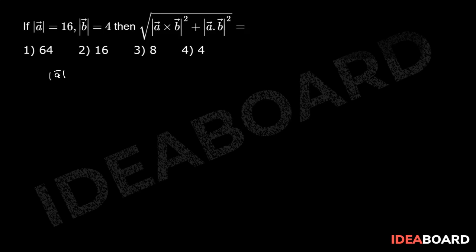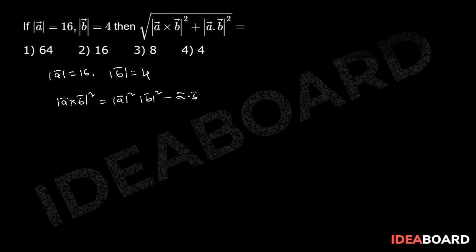Here, given modulus of a bar equal to 16 and modulus of b bar equal to 4. We know that modulus of a bar cross b bar whole square equals modulus of a bar squared into modulus of b bar squared minus a bar dot b bar whole square. That implies modulus of a bar cross b bar whole square plus modulus of a bar dot b bar whole square equals modulus of a bar squared into modulus of b bar squared.